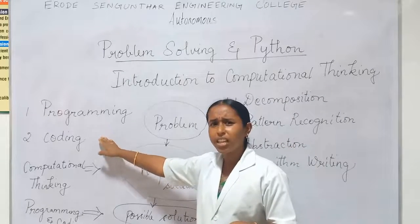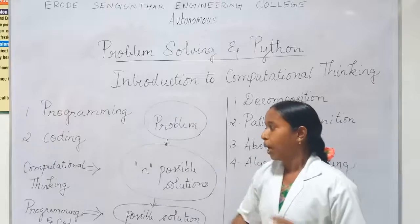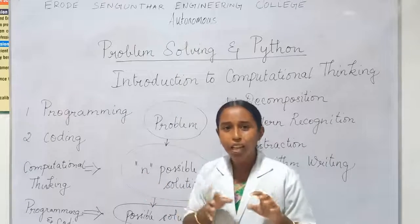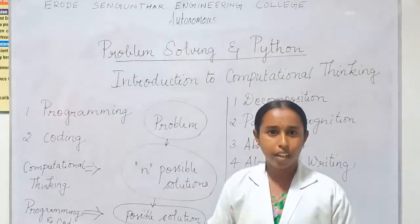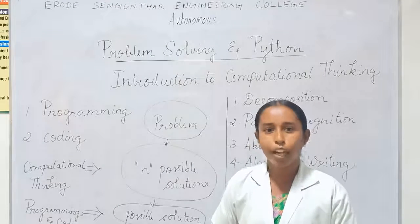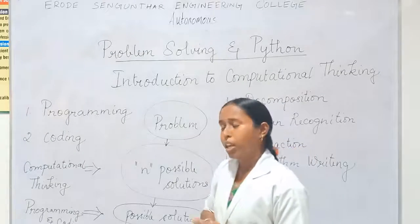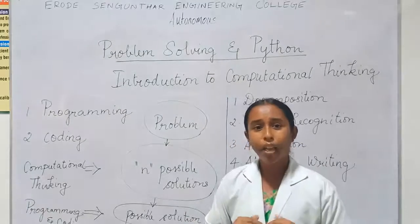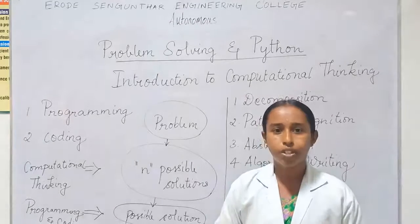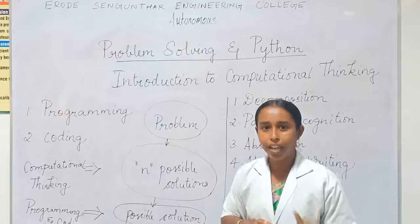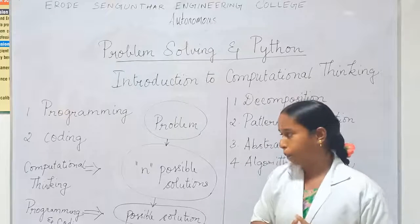But computational thinking is something different from programming and coding. Computational thinking deals exactly with problems. The problem is the real world entities which we are all facing in day to day life. Computational thinking gives n possible solutions to a particular problem, and among the n possible solutions, the one feasible solution will be suitable to that particular problem.